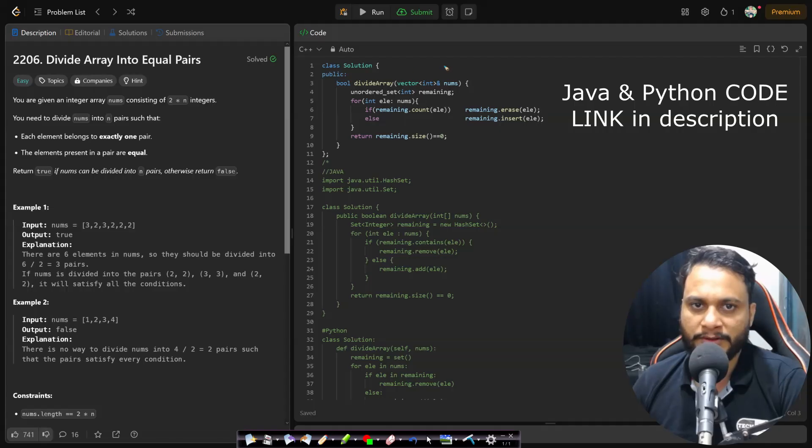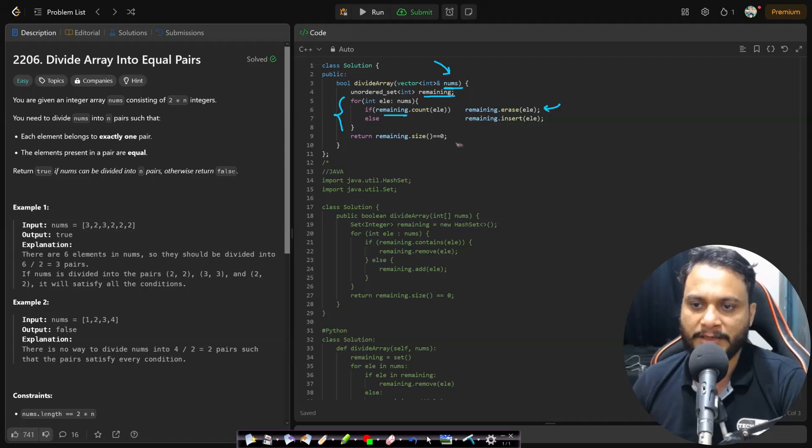This is the code for the third technique using set pairing and unpairing. We are given the nums array. I have taken a remaining unordered set and after that I will iterate through each item of the array. If the current item is present in the remaining set then I will erase it from the set, otherwise I will insert it into the set. After we are done iterating through all the items, at the end if the set is of size 0 then return true, otherwise return false. This is the entire code and I hope it is clear.